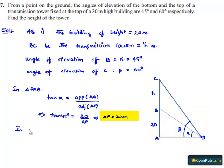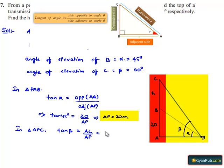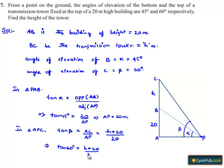Now let us consider triangle APC. In triangle APC, tan beta equals the opposite side AC divided by the adjacent side AP. AC is equal to H plus 20, and AP is 20 meters. So tan 60 degrees equals H plus 20 divided by 20. Since tan 60 equals root 3, we get H equals 20 root 3 minus 20, that is 20 into root 3 minus 1 meters.